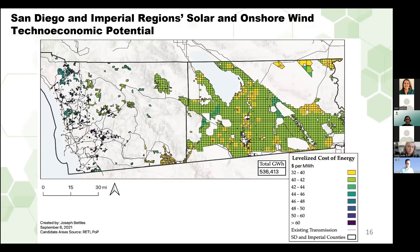El análisis también incluyó el potencial tecnoeconómico del condado de Imperial para poder incluir sus recursos en algunos de los escenarios. Este mapa muestra el potencial total de energía solar y eólica terrestre en los condados de San Diego e Imperial, donde el amarillo representa el menor costo y el morado el más caro por hora de megavatio. Hay más potencial solar y eólico en la región del condado de Imperial que en San Diego, principalmente debido a las diferencias geográficas y climáticas entre las regiones.